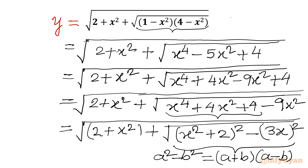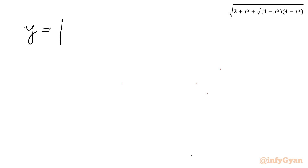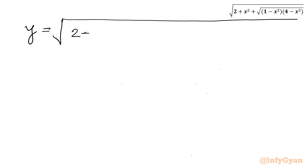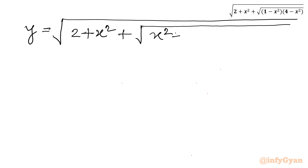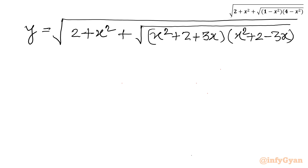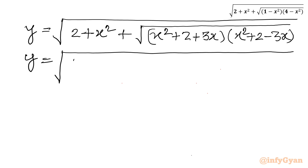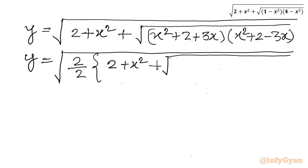So we can write further: y equals square root of (2 + x²) plus square root of (x² + 2 + 3x)(x² + 2 - 3x). Now I will write 2 over 2 — that is, multiply and divide by 2 — with the same radicand (2 + x²), and then square root of (x² + 3x + 2) times (x² - 3x + 2).